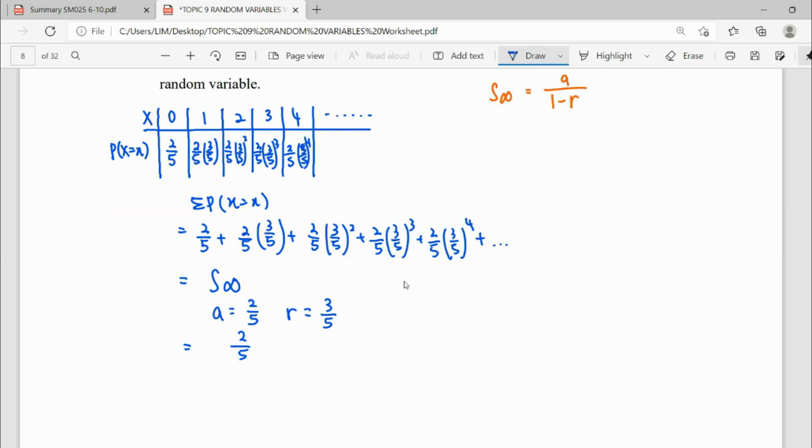When you want to sum to infinity, it will be a over 1 minus r. We can notice that this will give us 1. Once we get the total of probability equals to 1, we can conclude that we already showed this X is a discrete random variable.